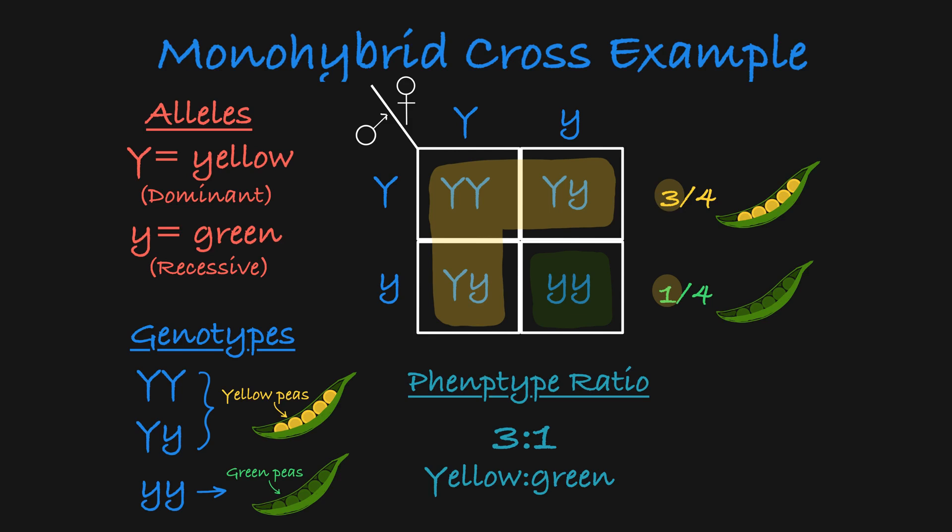So if you were to actually complete this cross, creating 100 offspring, you would expect to see around 75 yellow pea producing plants and 25 green pea producing plants, though you can't expect those exact numbers every time.